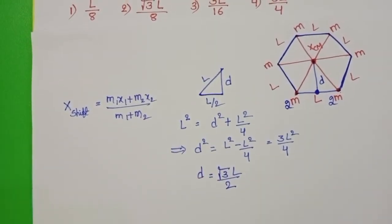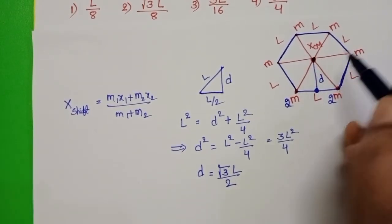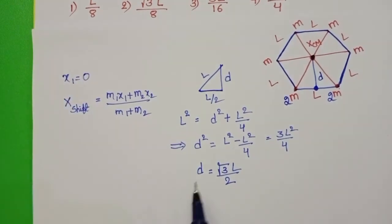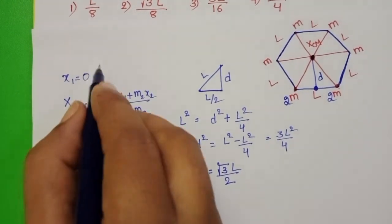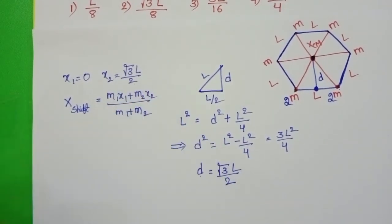From where we have to find out the position of center of mass, take that point as origin. So x₁ equals 0 and x₂ equals D, so x₂ equals √3 L/2.